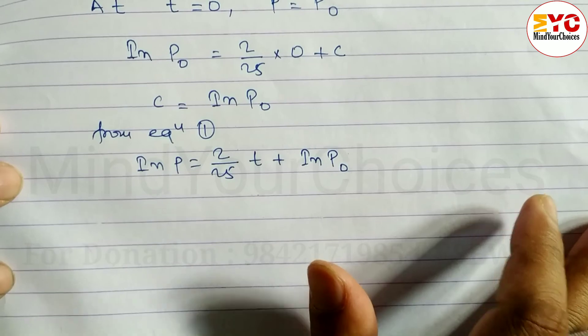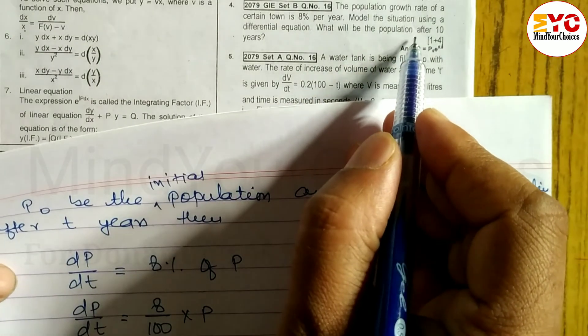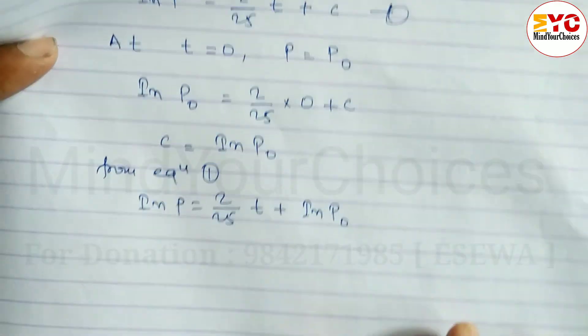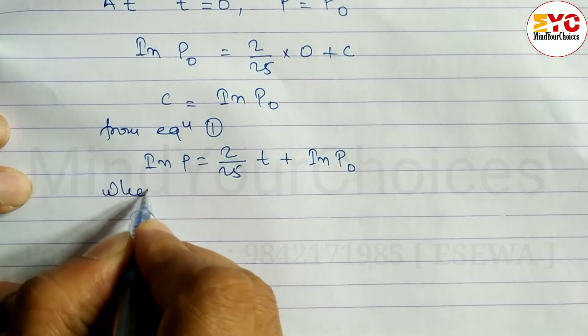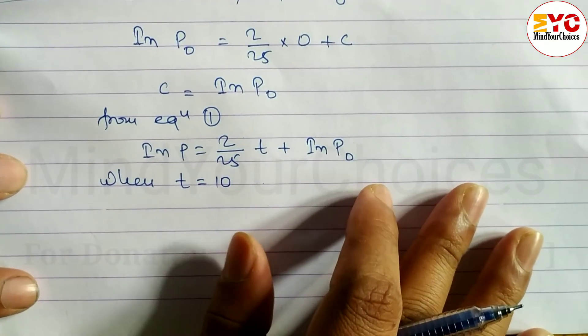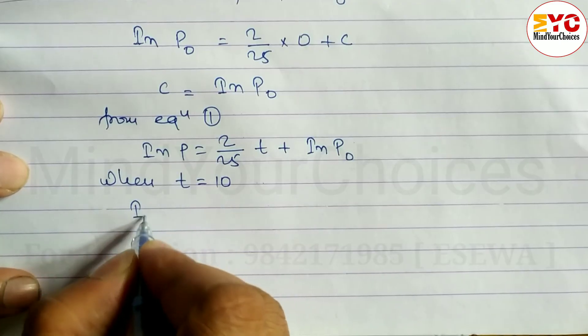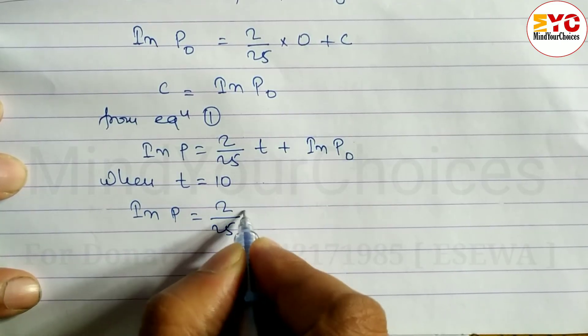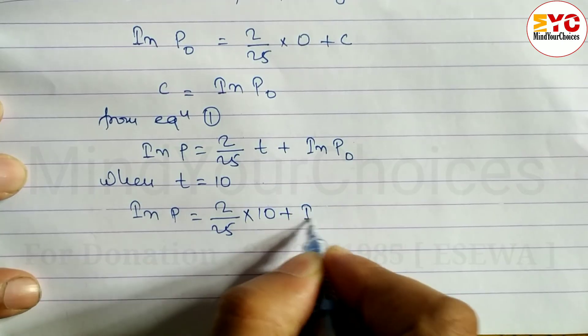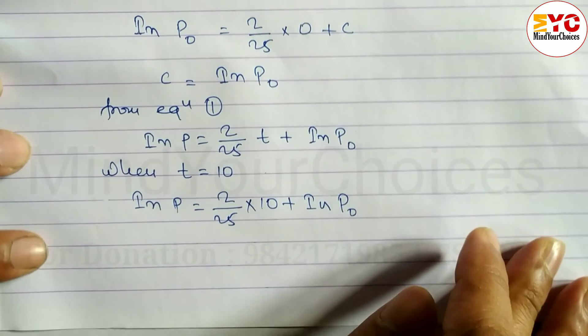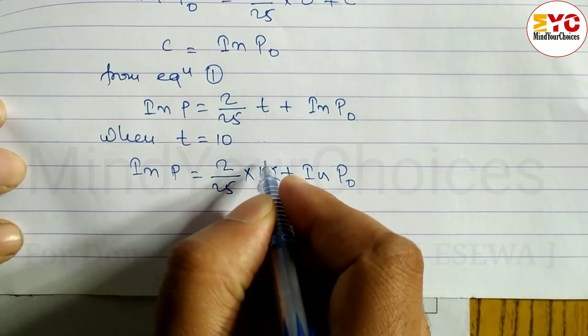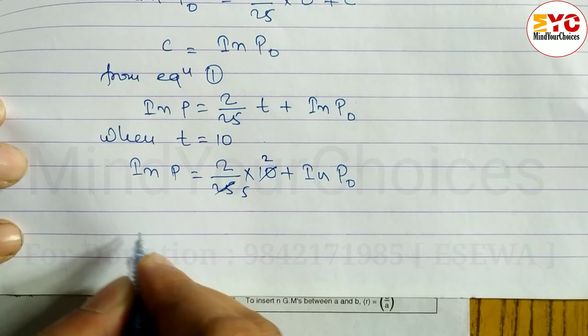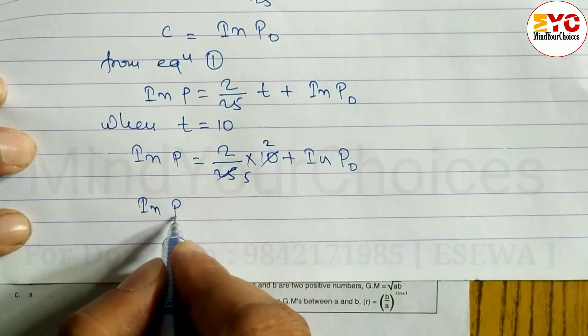Now the question asks: we have to find out the population after 10 years. So when T is equal to 10, ln P is equal to 2 by 25 into 10 plus ln P0. We can get ln P is equal to 4 by 5 plus log P0.